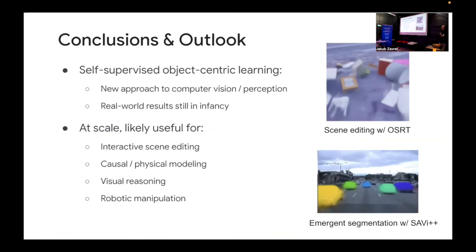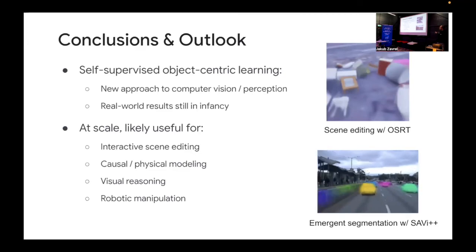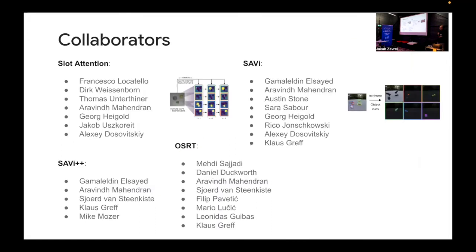Now to conclude, these kinds of methods on self-supervised object centric learning have really started to take off in the last couple of years and they kind of present a new approach to doing computer vision or perception. Whereas in the past we relied on large labeled datasets especially a lot of human annotated bounding boxes and segmentation masks for objects, we can now start to see that these kinds of things can actually emerge with just very simple inductive biases in these architectures. Now real world results are still in their infancy but our hope is that at scale this would likely be useful for interactive scene editing, for problems like causal and physical modeling, but also for things like visual reasoning and robotic manipulation. And you can see a little example here of scene editing with this 3D scene representation model here where we just iterate over the individual slots that the model learns and just remove them one at a time. And it's not perfect and the reconstructions are pretty blurry but you see that there's some compositionality that comes out of this model. And with that I'd like to thank my collaborators and I think we have a few minutes for questions.